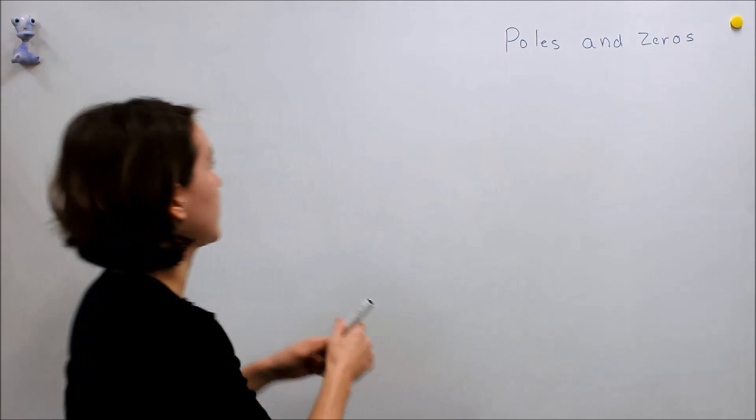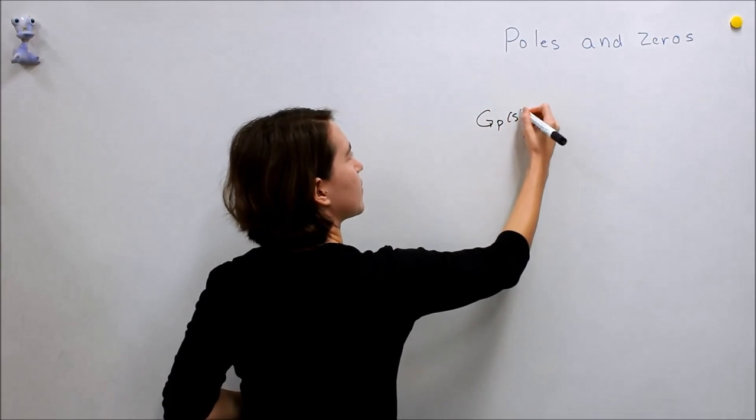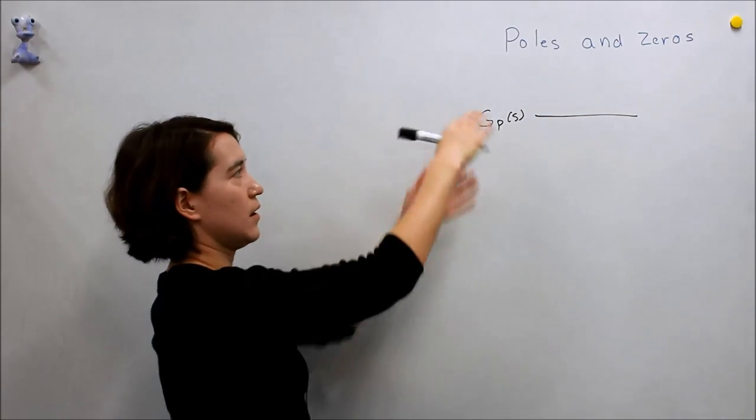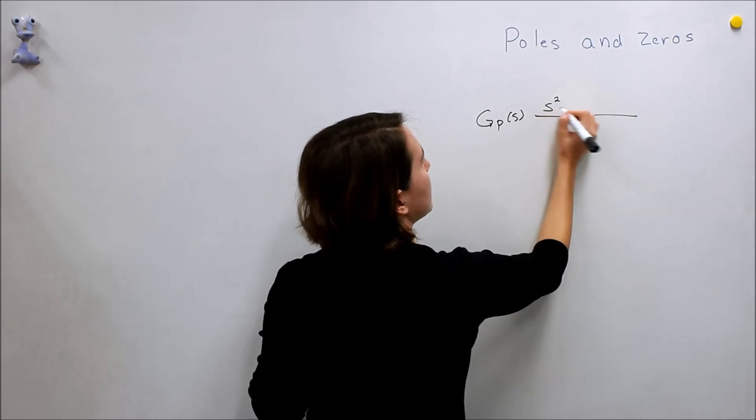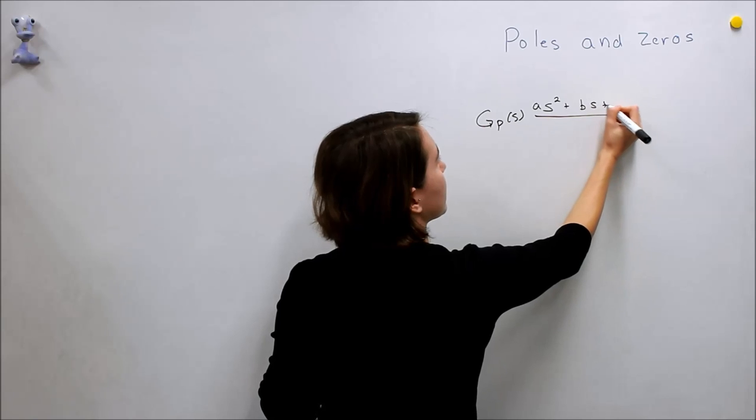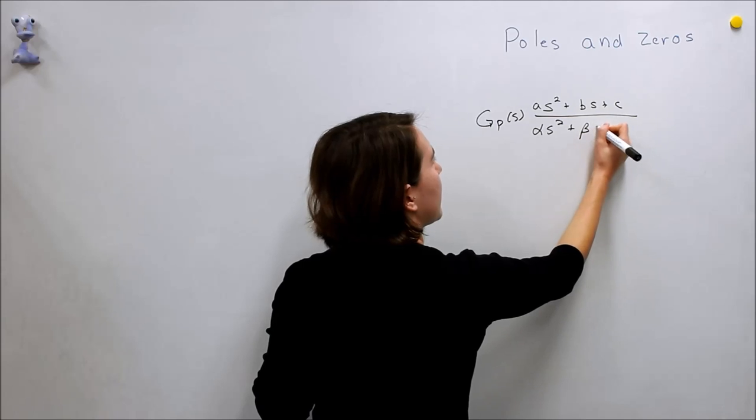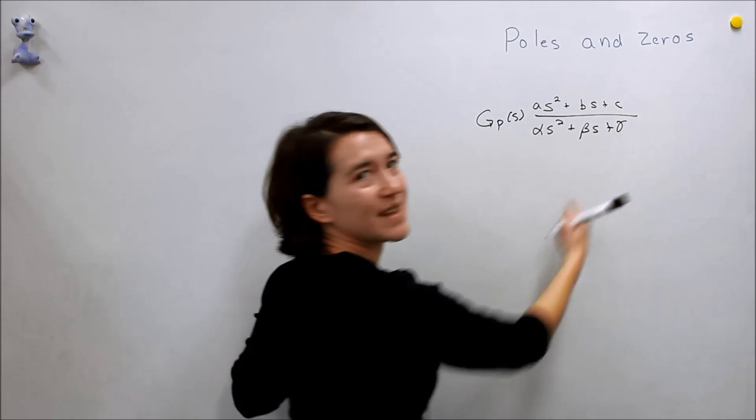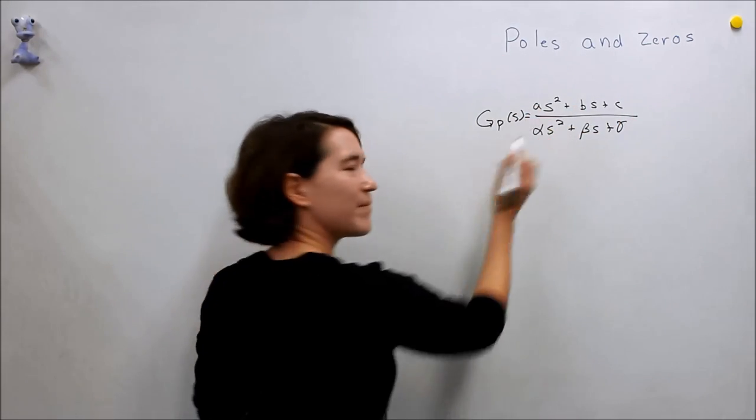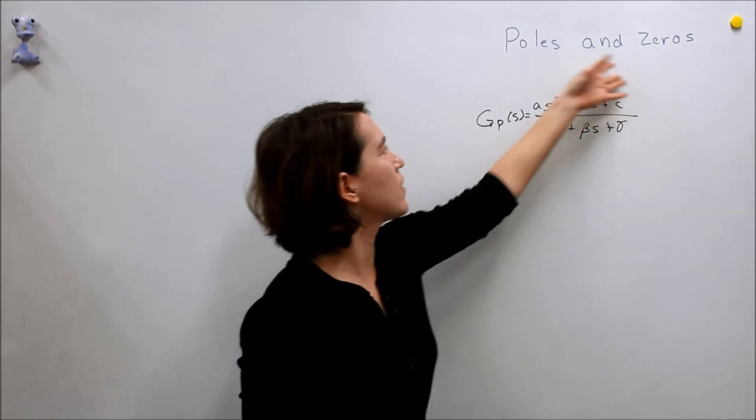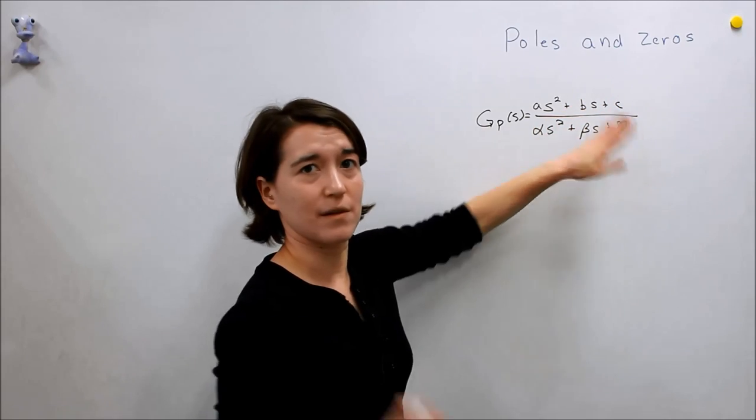So we're going to define that right now. So in a transfer function, we usually have, we'll say we have a plant, some transfer function. We have usually a numerator and a denominator. And usually it's something like a*s² + b*s + c. And on the bottom you have something like α*s² + β*s + γ (I'm just going to use gamma because I don't know what the c is in Greek). Alright, so we have some system here equals.